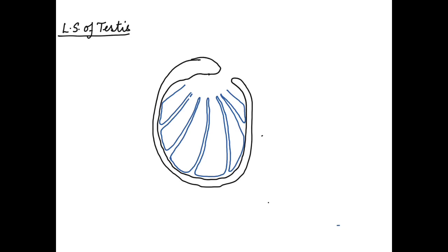Once you finish drawing these compartments which are called lobules, we now draw coiled structures inside them, coiled tubes inside these lobules. There are about 2 to 3 such coiled tubes in each lobule.